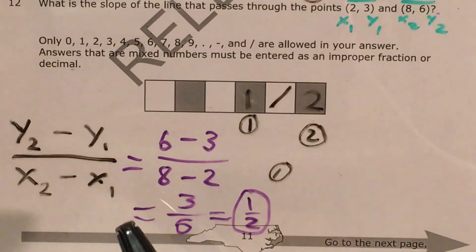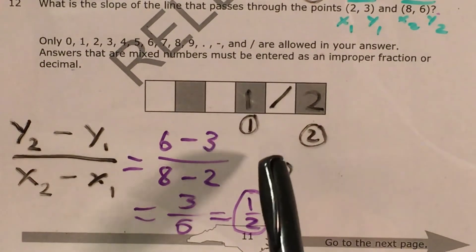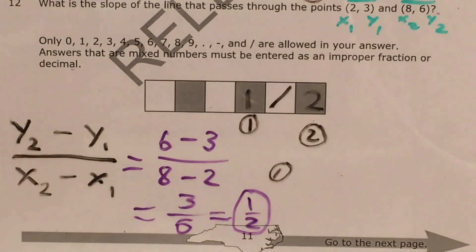So there's two ways to find slope that I demonstrated with this problem, and also how to write a fraction into our gridded response boxes.